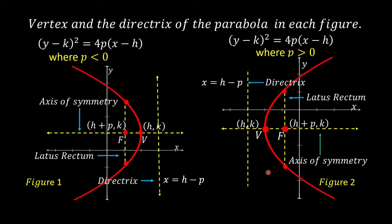In Figure 2, the vertex is at point (h, k). The equation of the directrix is x = h minus p. If the vertex is at the right side of the directrix, the parabola opens to the right, and its equation is in the form (y - k)² = 4p(x - h), where p is greater than 0.